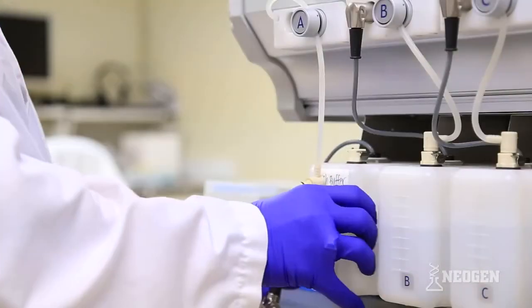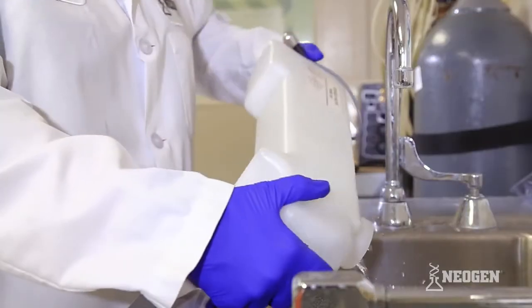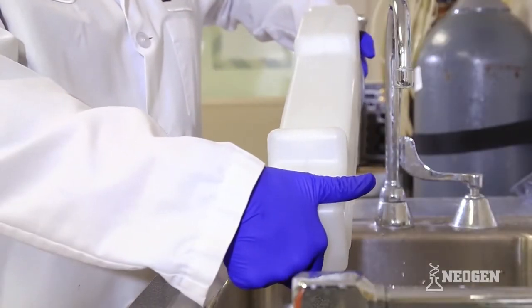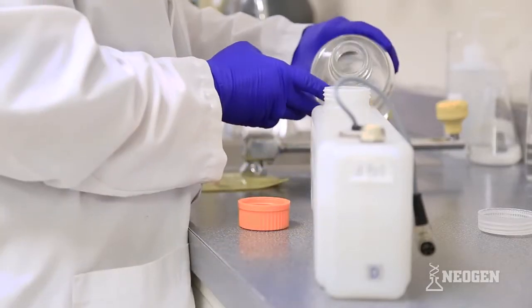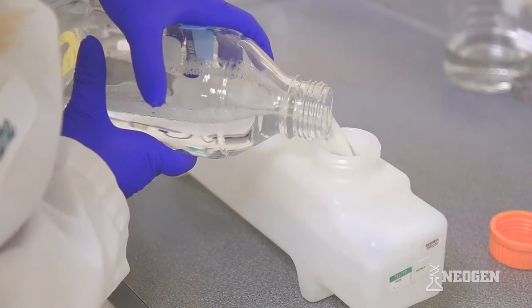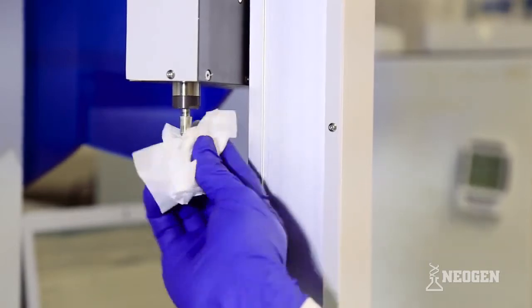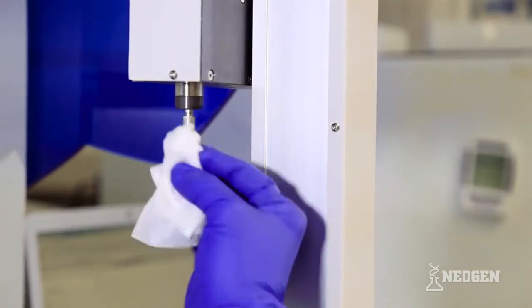For weekly maintenance, remove wash bottles A and D from the instrument and pour both the diluted wash buffer and the DI water down the drain. Rinse both wash bottles three to five times with DI water. Replace both DI water and the diluted wash buffer into wash bottles A and D. Wash pipetter with 70% alcohol solution to prevent contamination.